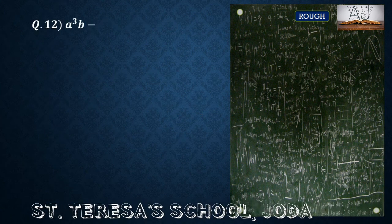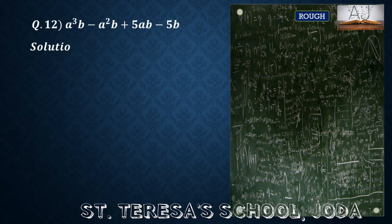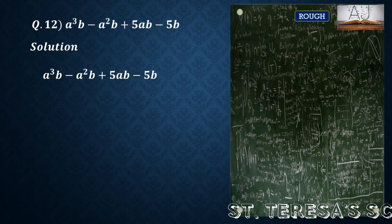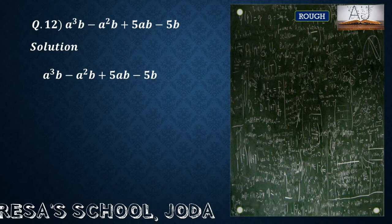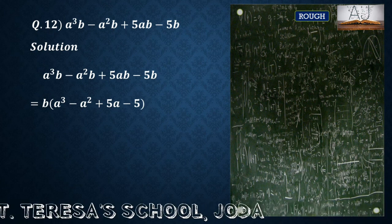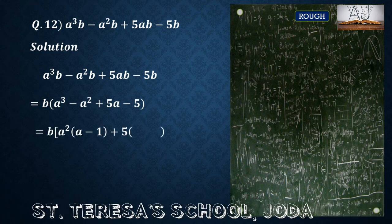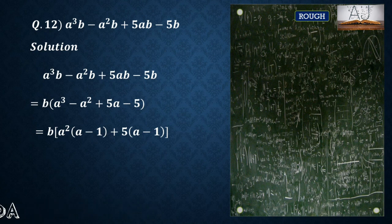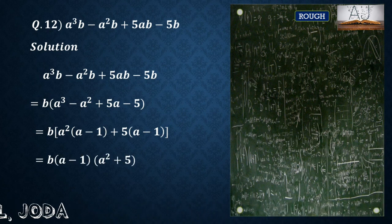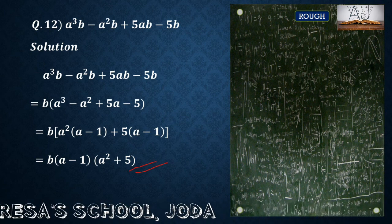Question number 12: a cube b minus a square b plus 5ab minus 5b. From all terms here we have b common, so take b common first — don't forget to take common from all if possible. So a cube minus a square plus 5a minus 5 is left. From the first two terms a square is common, giving a(a minus 1). From the last two, 5 is common, giving 5(a minus 1). Now from both terms we have (a minus 1) common. So the factors are b, (a minus 1), and (a square plus 5).